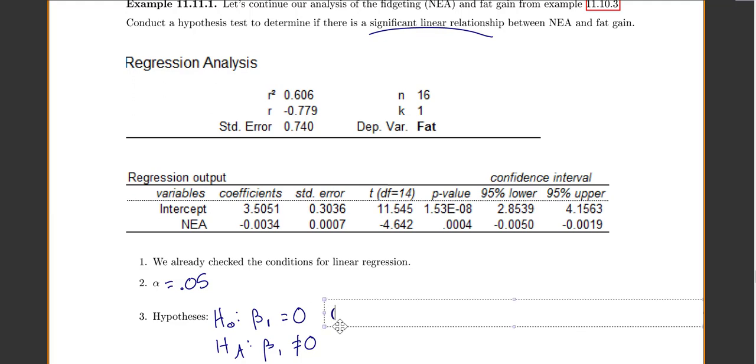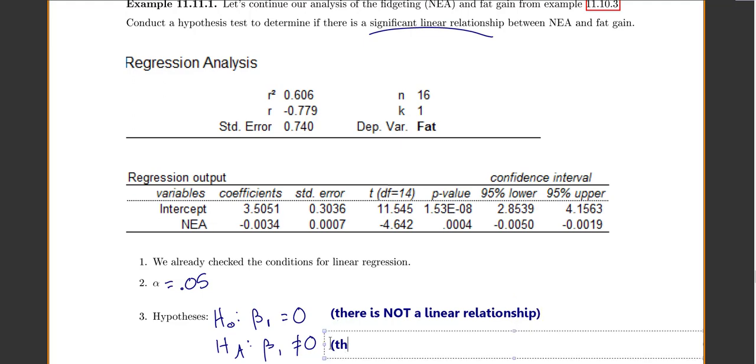So if my slope is 0, that means there is not a linear relationship. If my slope is not equal to 0, that means there is a linear relationship.